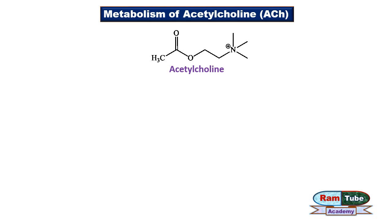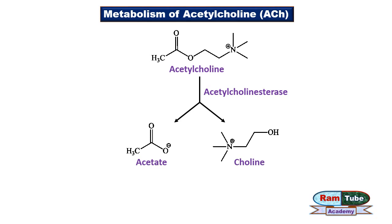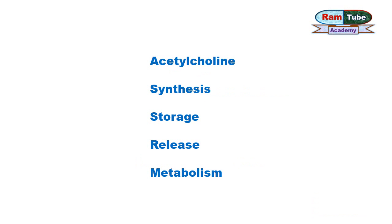Now let's see how acetylcholine is metabolized. Acetylcholine contains an ester linkage which can be hydrolyzed by the enzyme esterase. In the presence of acetylcholinesterase, acetylcholine is broken down into acetate and choline. This metabolism mainly occurs at the synapses.